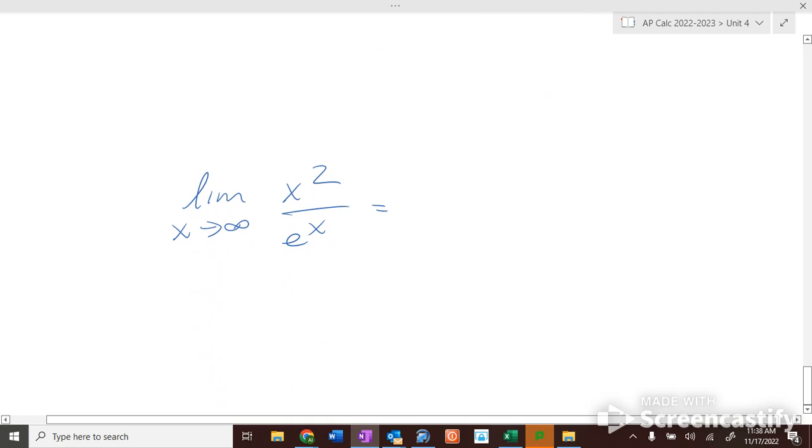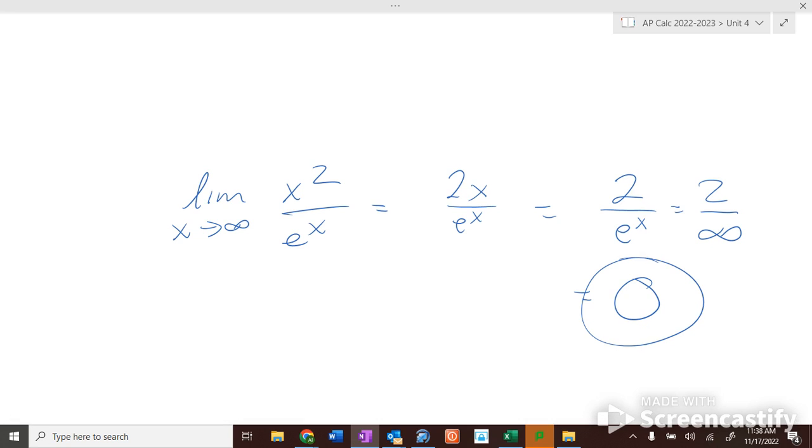As we go towards infinity we get infinity over infinity, so what should we do? 2x over e to the x. If I stick in infinity I get infinity over infinity, so what should I do? Take the derivative again, it's 2 over e to the x. So it's 2 over infinity, any number over infinity equals 0. And there we are, that is your test review for your test AP classroom test.